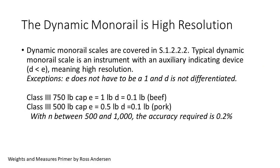The dynamic monorail with an auxiliary indicating device is covered in S122.22. Current instruments all have a D smaller than E, which means they are high resolution. Notice that E does not have to be a 1 and the D is not differentiated like class 1 or 2. Typical instruments are class 3. For beef: 750-pound capacity with E equal 1 pound and D equal 0.1 pound. For pork: 500-pound capacity with E equal 0.5 pound and D equal 0.1 pound.